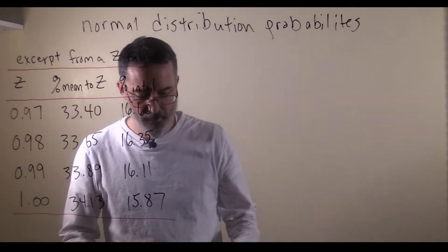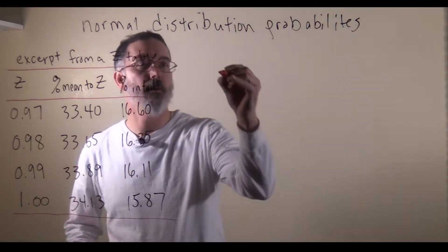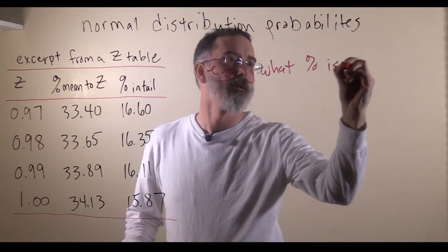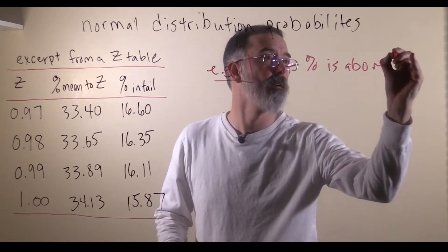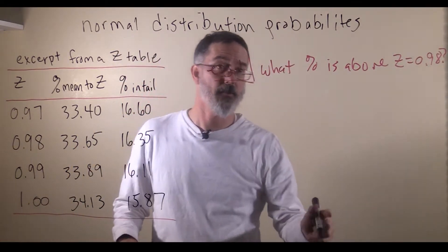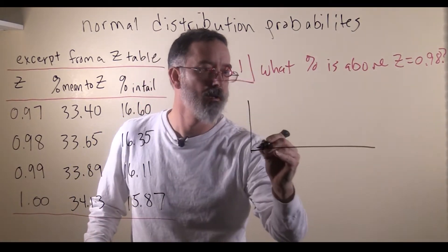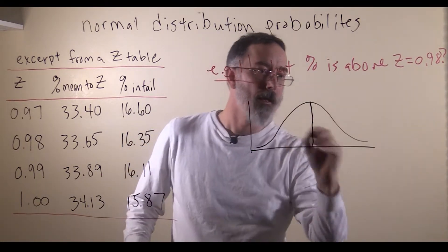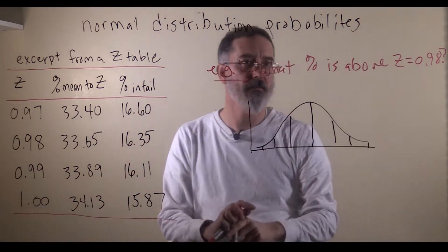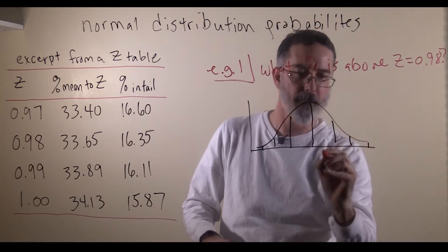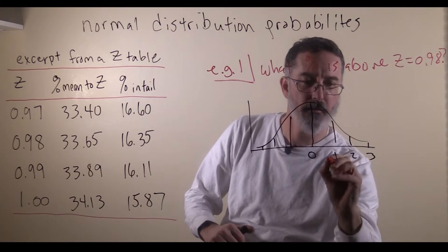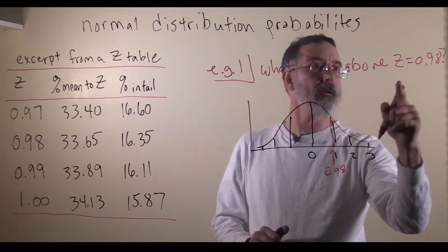Let's work through some problems to illustrate how to use this table. Example problem number one: what percent of a normal distribution is above z equals 0.98? My advice when solving these kinds of problems is to first draw a normal distribution and then color in what you are trying to figure out. We want the percent above z equals 0.98, so 0.98 is right around there — we want that point plus everything above it.